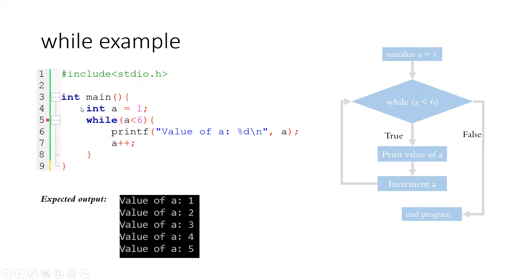Here is the flowchart counterpart. Line 4, your declaration and initialization, corresponds to setting 'a' equal to 1. Then it proceeds to evaluating your while loop condition — while 'a' is less than 6. If it is true, it prints the value of 'a', increments 'a', then returns to the condition and re-evaluates with the new value of 'a'. Once 'a' becomes equal to 6, the condition returns false and the program ends.